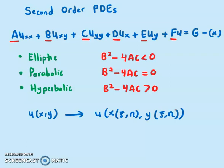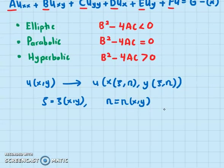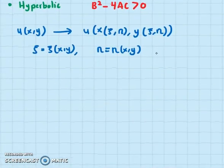In order to do that, we introduce ψ and η, where ψ is a function ψ(x, y) and η is also a function η(x, y). We need to use the chain rule involving ψ and η.